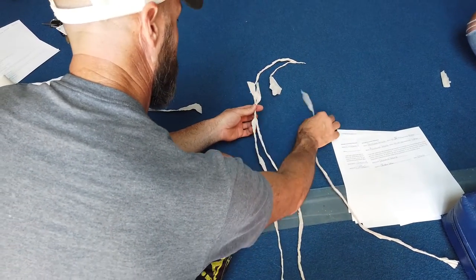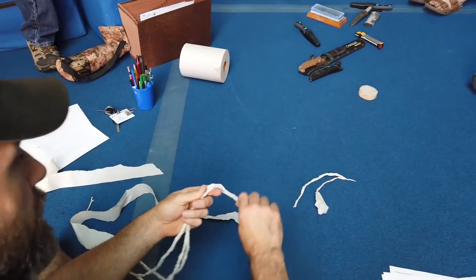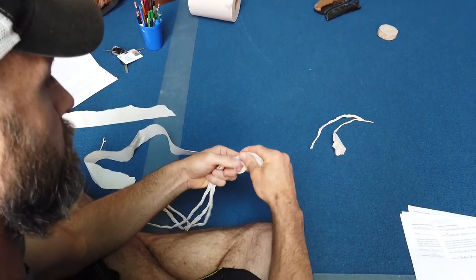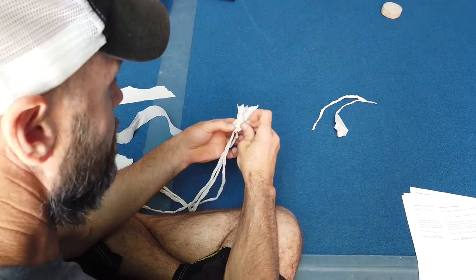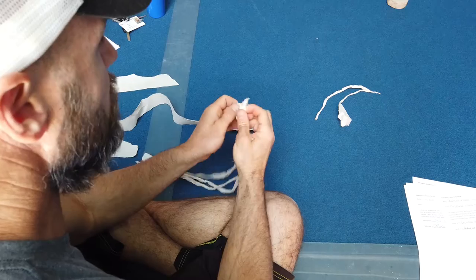Alright, so if you need to make a lot of cordage really fast, braiding is your next best option. Ideally you want them equal thickness if you can get them that way, so if we have this yucca...